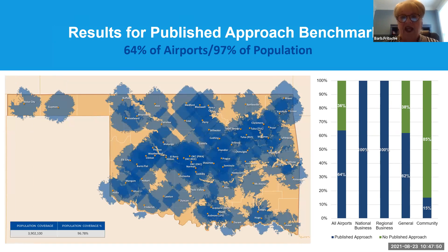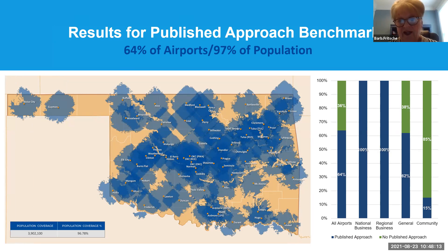For airports with any kind of published approach, currently 64% of all airports in the system have some type of published approach, resulting in coverage of almost 97% of the state's population. There are recommendations in the plan for additional airports to have published approaches, and we'll show how that bar will change if all airports meet their objectives.